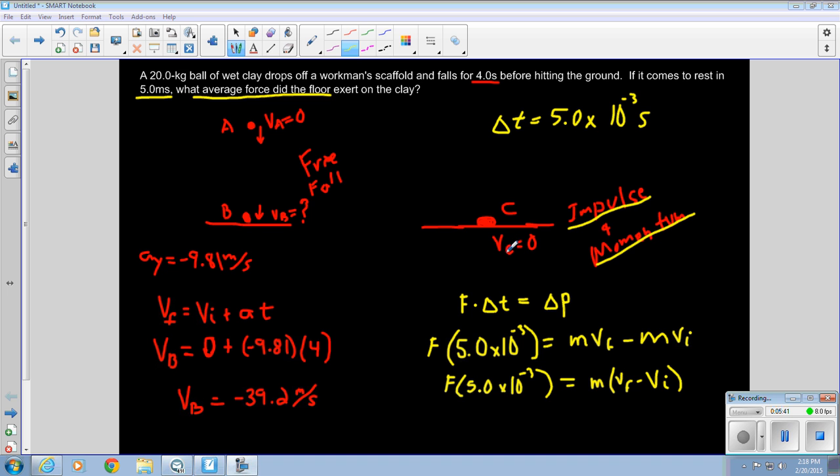Our final velocity is velocity C. So instead of writing VF, let's write it as VC. And our initial velocity is actually velocity B. Let's call it what it is, because that's the initial velocity right before impact.